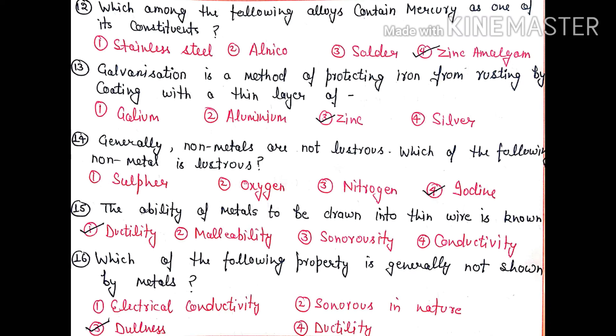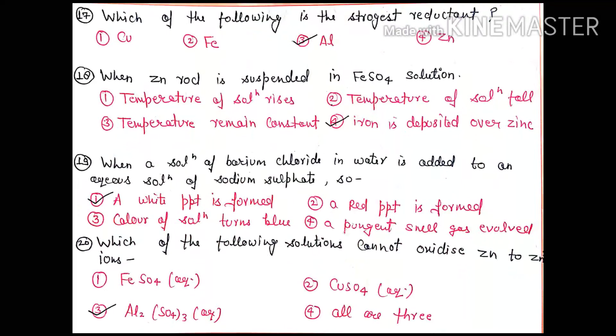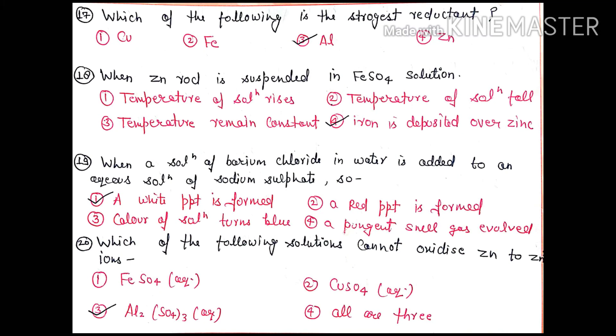Question 16: Which of the following property is generally not shown by metals? Electrical conductivity, sonorous, and ductility are all shown by metals, but dullness is not shown. The right option is option 3. Question 17: Which of the following is the strongest reductant? A reductant is a reducing agent that easily donates electrons. According to the activity series, aluminium is the strongest, so the right option is 3.